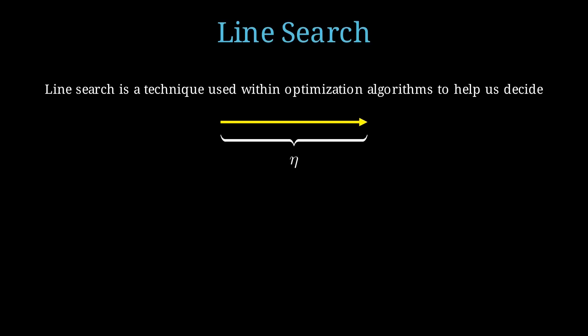The step size is a scalar quantity. We typically represent it by the symbol eta. The line search problem is about finding the best eta, or step size, that minimizes the function phi.